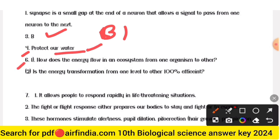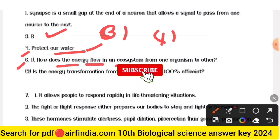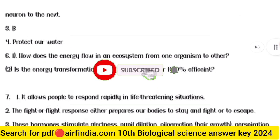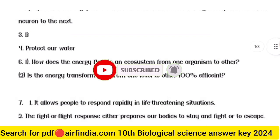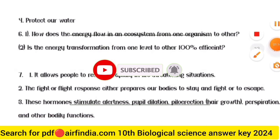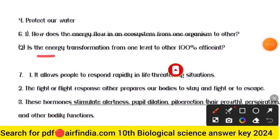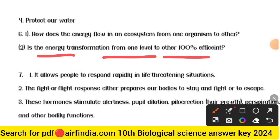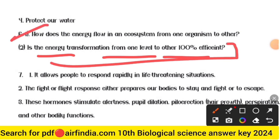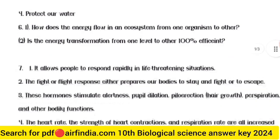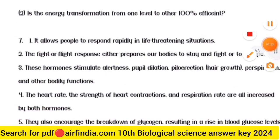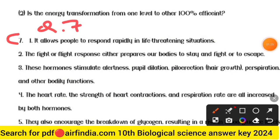Question six answer: point one — how does the energy flow in an ecosystem from one organism to another; and point two — the energy transformation from one level to another is not hundred percent efficient. That is your question number six answer. Now here is your question number seven answer.